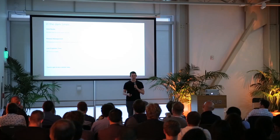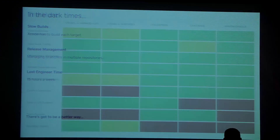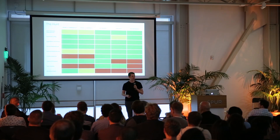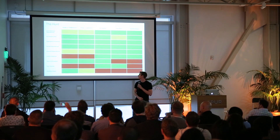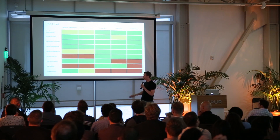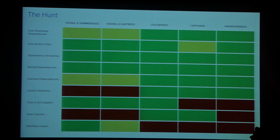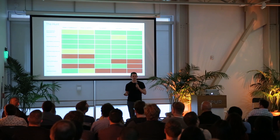That's why I decided to take this on during my rotation on the foundation team. I started by creating a spreadsheet, identifying some traditional and non-traditional options for dependency management, and identifying our criteria for what we were actually looking for. On the left was our control — Vessel and submodules. And then we looked at Vessel and subtrees, CocoaPods, Carthage, and some oddities like Maven and Gradle. CocoaPods was the one that met most criteria for us. The only thing that really stood out was the workflow impact, but any change of tools is going to have a workflow change, so we figured that was acceptable.